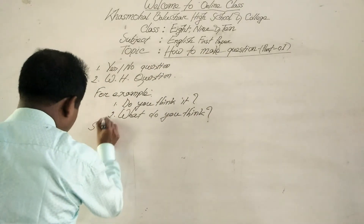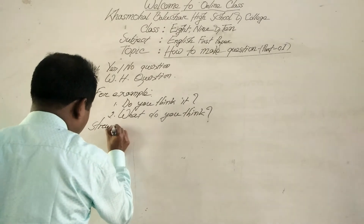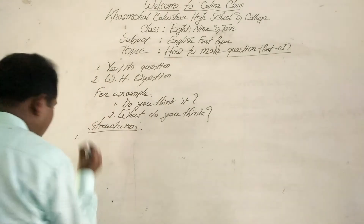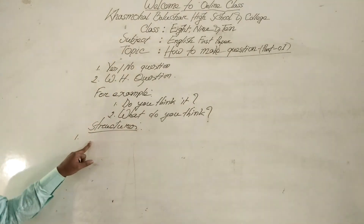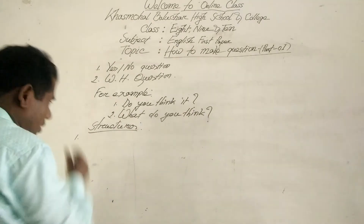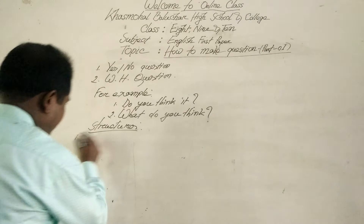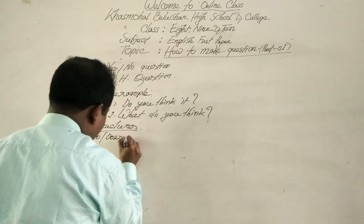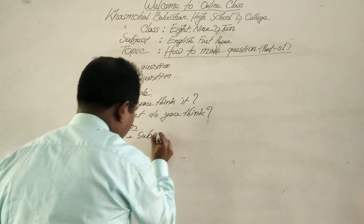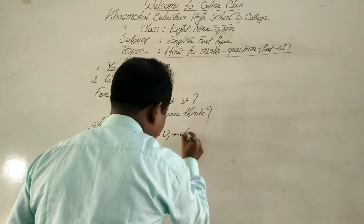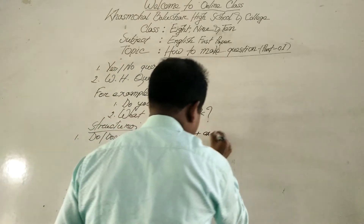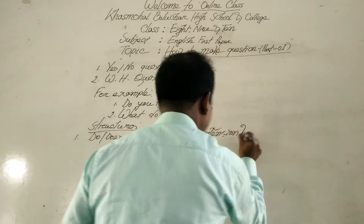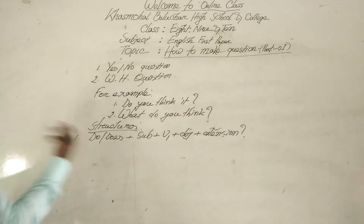Structures. Number one: present indefinite tense. Do/Does + subject + verb base form + object + extension. This is the structure of present indefinite tense Yes/No question.